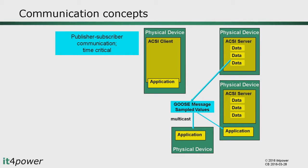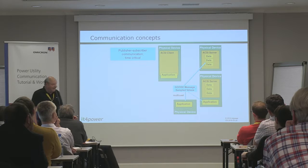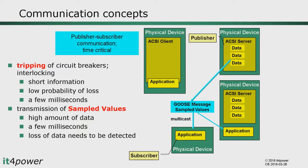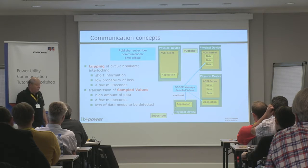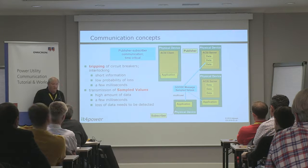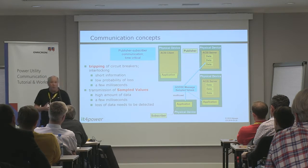For time-critical applications, 61850 uses a second set of communication concepts called publisher-subscriber communication. The concept is that a publisher sends data to subscribers who are interested in receiving it. GOOSE messaging and sampled value transmission are the two key services in this area. This is used for everything time-critical in a substation, as well as for peer-to-peer communication between bay-level devices — for example, tripping of circuit breakers, interlocking, and protection schemes.